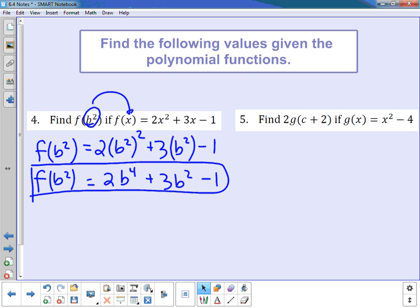So now let's take a look at number 5. I'm going to help you get started on number 5, and then I want you to finish it off for your quiz today. So we're going to start by taking this c + 2 and plugging it in for x. And when we're done with that, we're going to multiply the whole thing by 2.